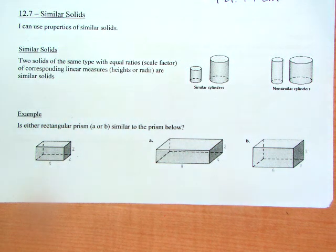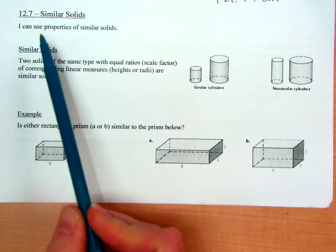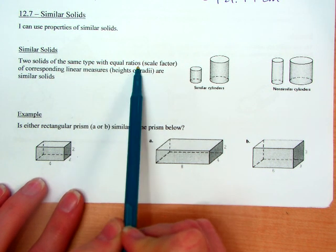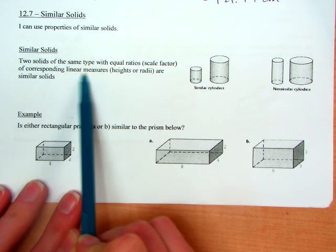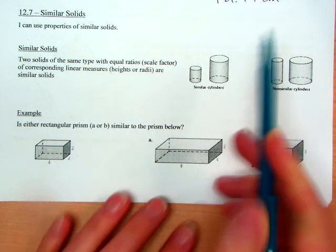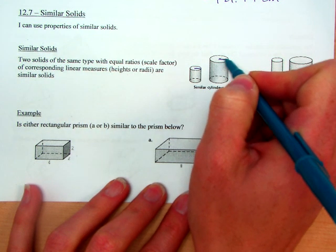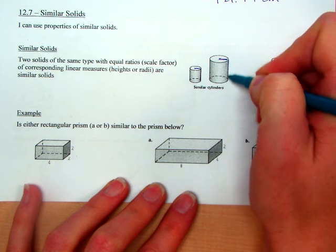Okay, this is 12.7, it's our last section of the year, and today we're going to be talking about similar solids, so figures that are the same type with equal ratios, means their scale factor, of corresponding measures. So we're talking about their radiuses being in proportion and their heights being in proportion.